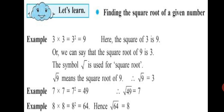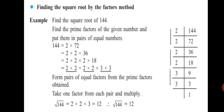But what can be done if there are 3-digit or 4-digit numbers and we have to find a square root? There is a method — finding the square root by the factors method. To find the square root of 144, the first step is to find the prime factors of the given number. Since 144 is even, we start with 2 and continue finding all prime factors. Once we have all the prime factors, we note them down horizontally.